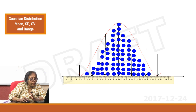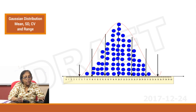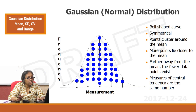Maximum clustering happens at the center point, then there is some more clustering nearby, and then very little clustering beyond that. What do we call this dispersion? We have to look at this once again.